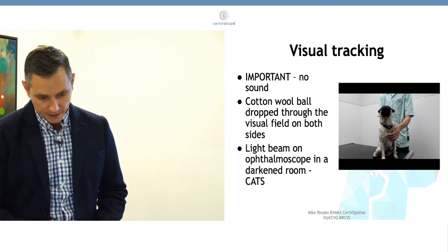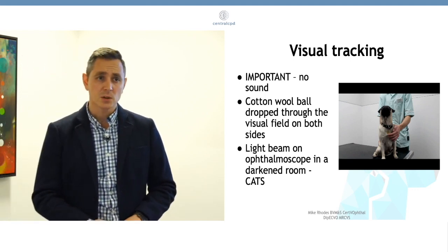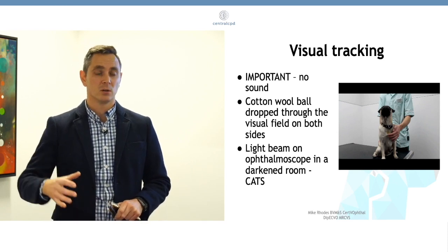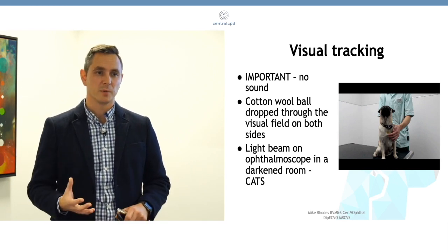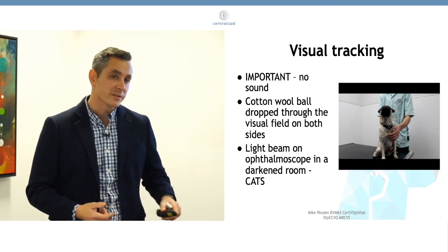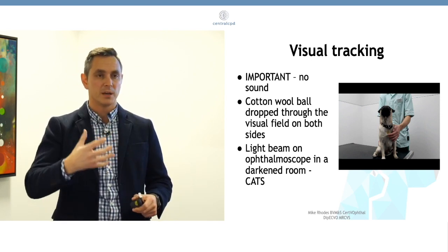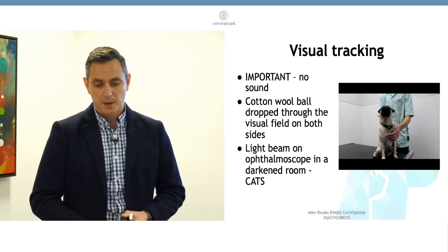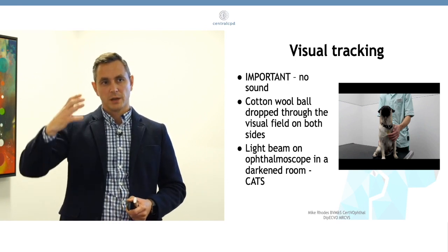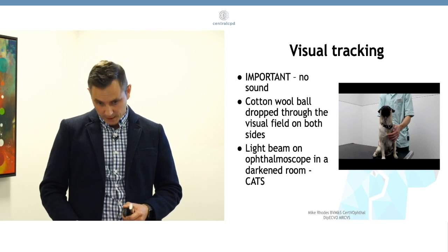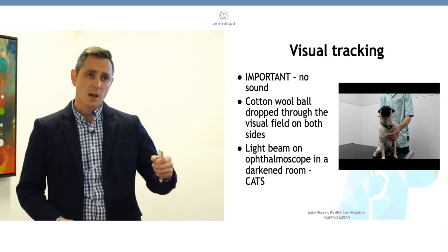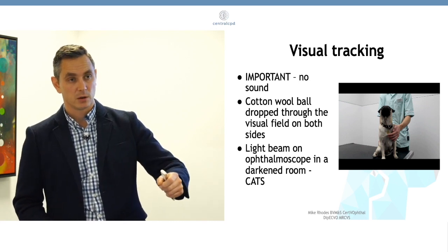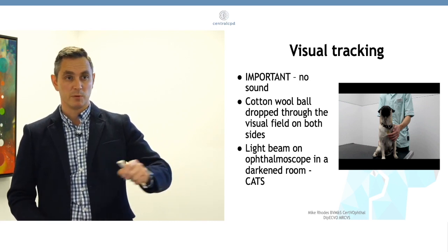And then we have visual tracking. It's really important that whatever you're using to do the tracking or the object, it makes no sound, because an animal will look towards a sound and it might mean you might be getting a false positive. Cotton wool is really good. And you literally drop the cotton wool into the animal's field of view and see if it tracks it. A good tip for cats, in a darkened room, you have your light beam on your ophthalmoscope and move it around.